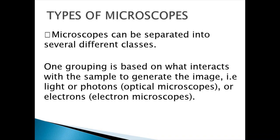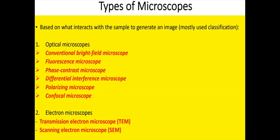This grouping is based on what interacts with the specimen sample to generate the image. When light or photons interact with the specimen, those microscopes are called light compound microscopes or optical microscopes. When electrons interact with the sample, that is an electron microscope. The microscope is named according to what interacts with the sample.